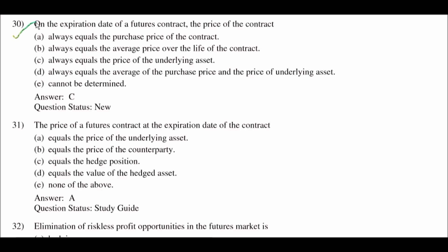Next question: on the expiration date of a futures contract, the price of the contract — option A: always equals the purchase price of the contract; option B: always equals the average price over the life of the contract; option C: always equals the price of the underlying asset; option D: always equals the average of the purchase price and the price of the underlying asset; option E: cannot be determined. The right answer is option C: always equals the price of the underlying asset.